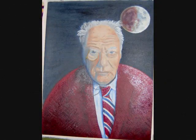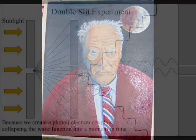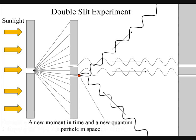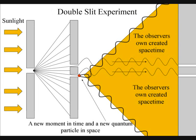When the observer tries to determine which slit a photon passes through, the interference pattern collapses. This is because to observe the photon, we have to create a photon-electron coupling, collapsing the wave function, creating a new moment in time and a new quantum particle in space.